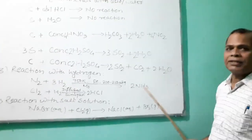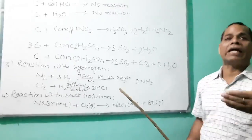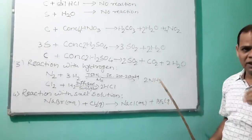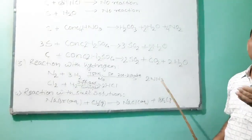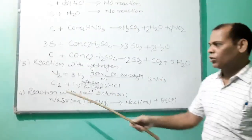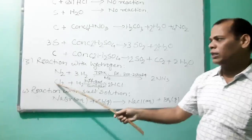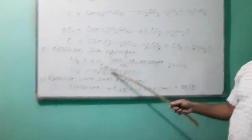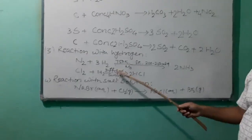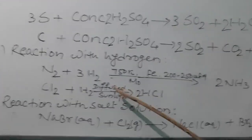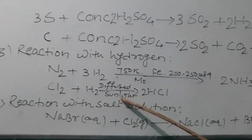Ammonia is the hydride of nitrogen. Chlorine, when passed through hydrogen in the presence of diffused sunlight, forms hydrogen chloride.